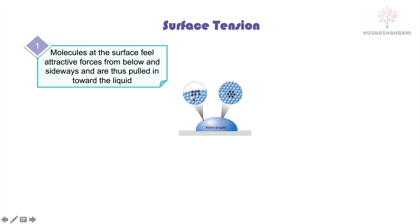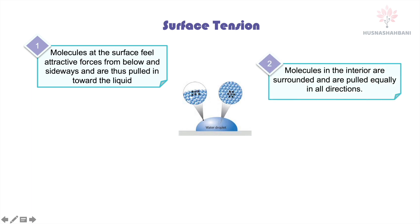Molecules at the surface feel attractive forces from below and sideways, because the particles are close to each other. There is no water molecule on top, so surface molecules only feel attractive forces from below and sideways. Thus, they are pulled in towards the liquid — sideways and below. The molecules in the interior, however, are surrounded and pulled equally in all directions.